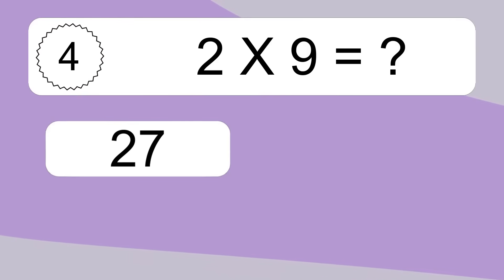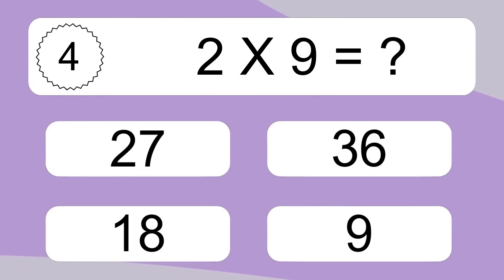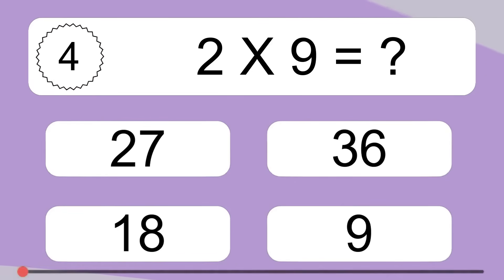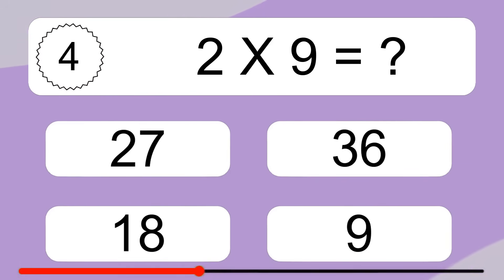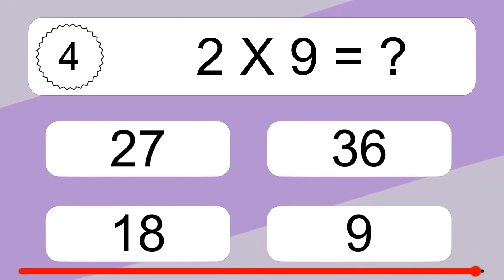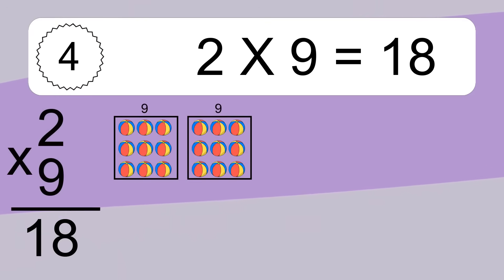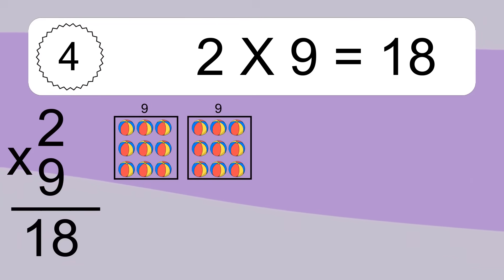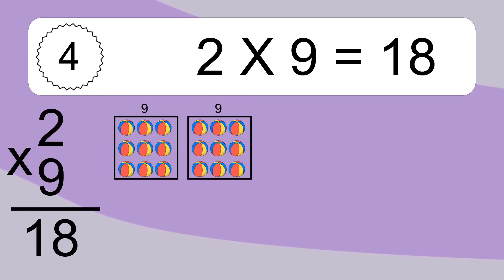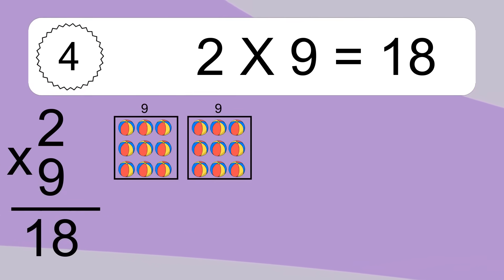Two times nine equals what? We have two boxes, and each box has nine colorful balls inside. If you count all the balls in all the boxes together, you will have 2 times 9 balls. This equals 18 balls.